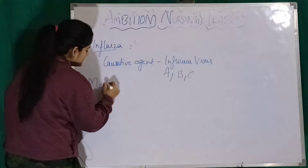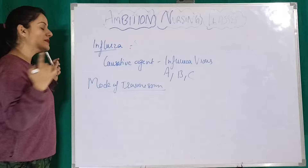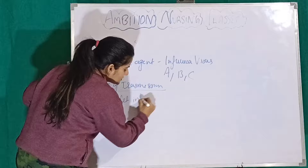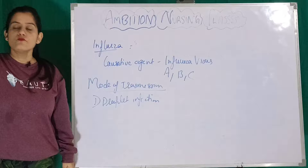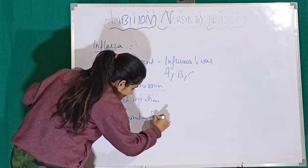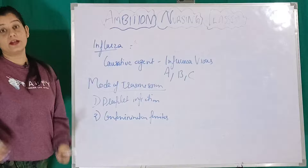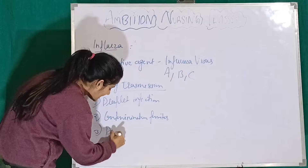Now, coming to the Mode of Transmission — this means how the Influenza virus can spread into our body. The first is Droplet Transmission: this means that in the air, through droplets from sneezing or coughing, the virus can transfer to a healthy person. The second is Contaminated Fomites. The third is Direct Contact, meaning handshaking or touching surfaces that an infected person has already touched.